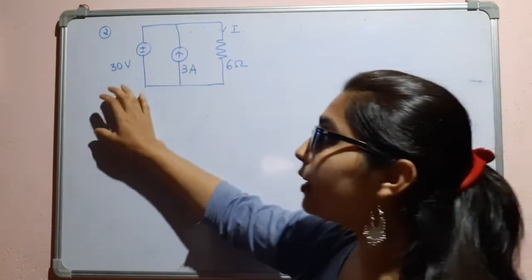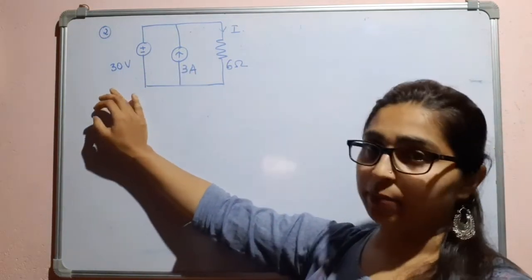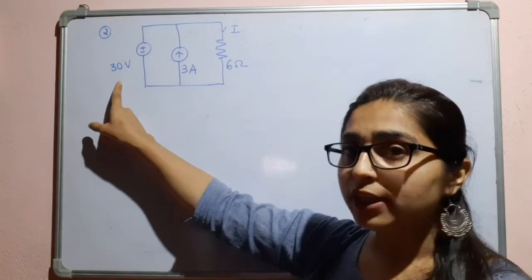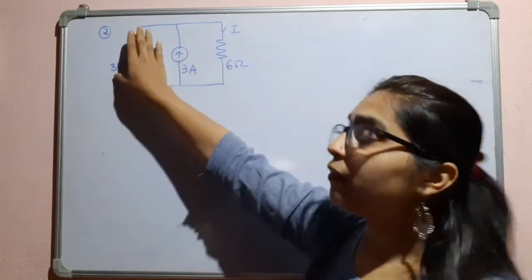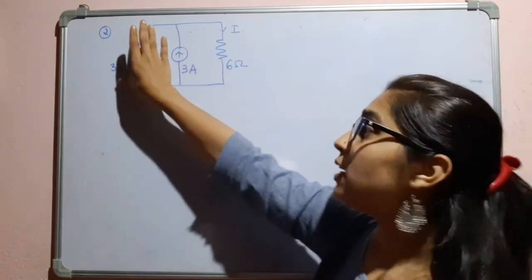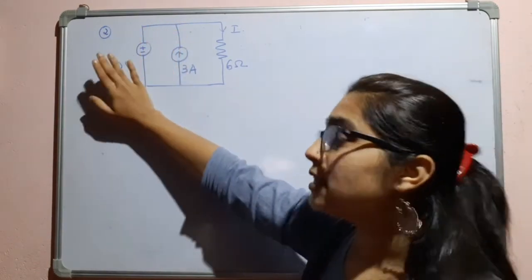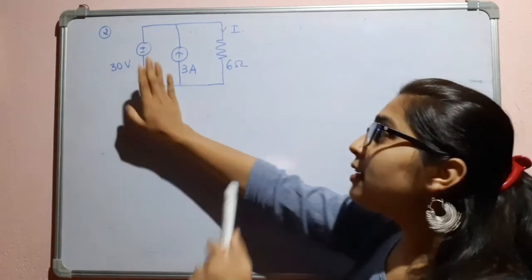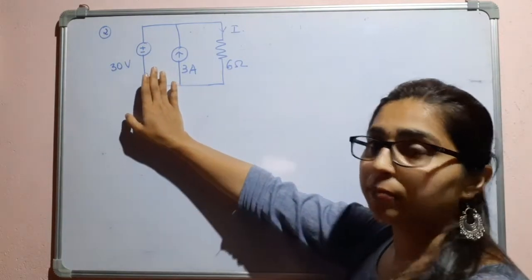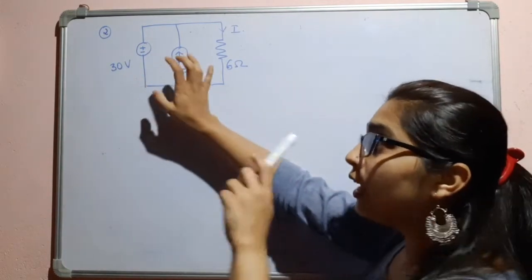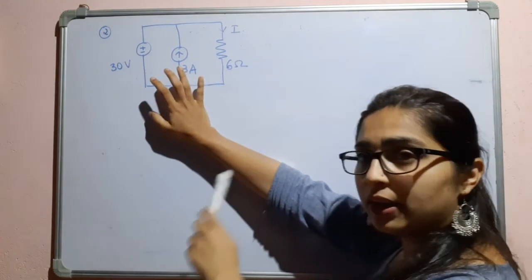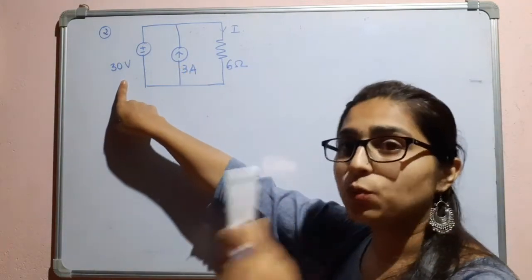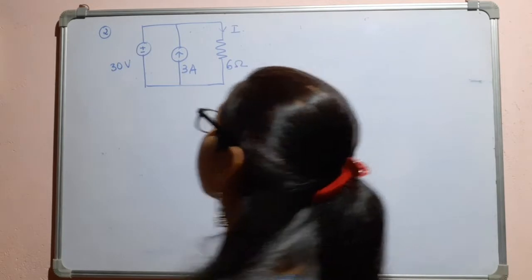Using superposition theorem, you have to consider only one source at a time. There is one voltage source and one current source. If you are considering the voltage source, the current source should be made open. If you are considering the current source, the voltage source should be shorted.